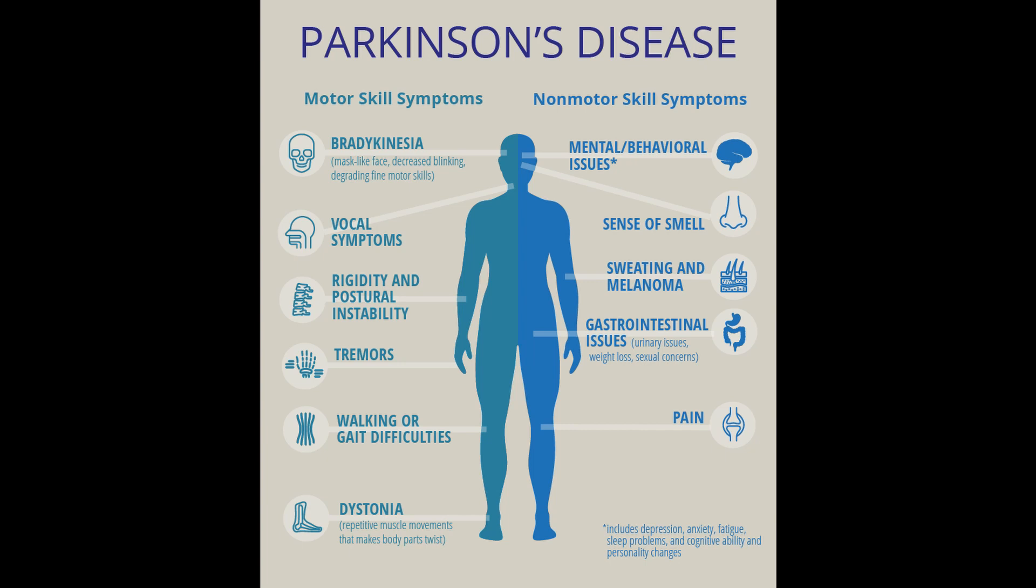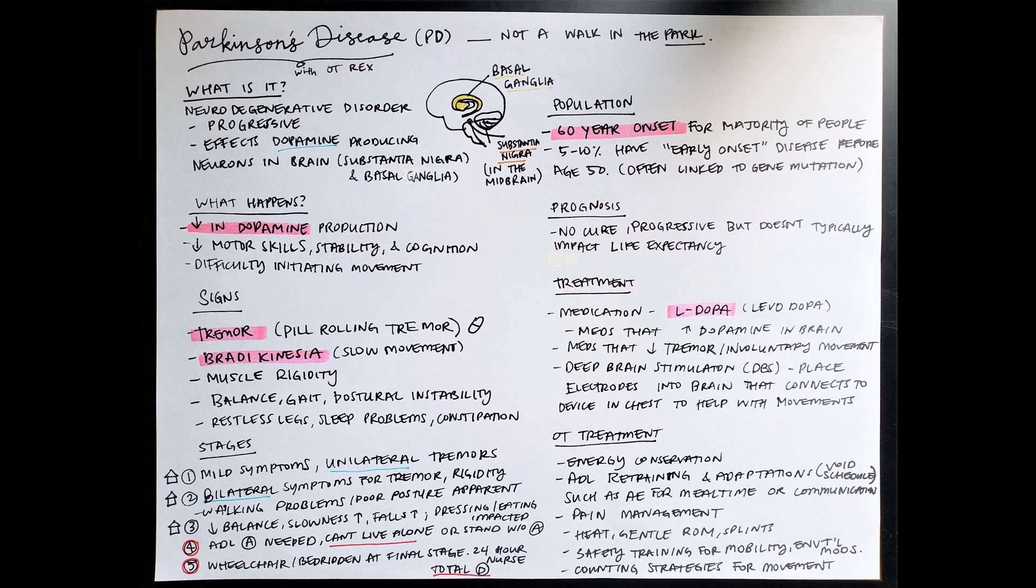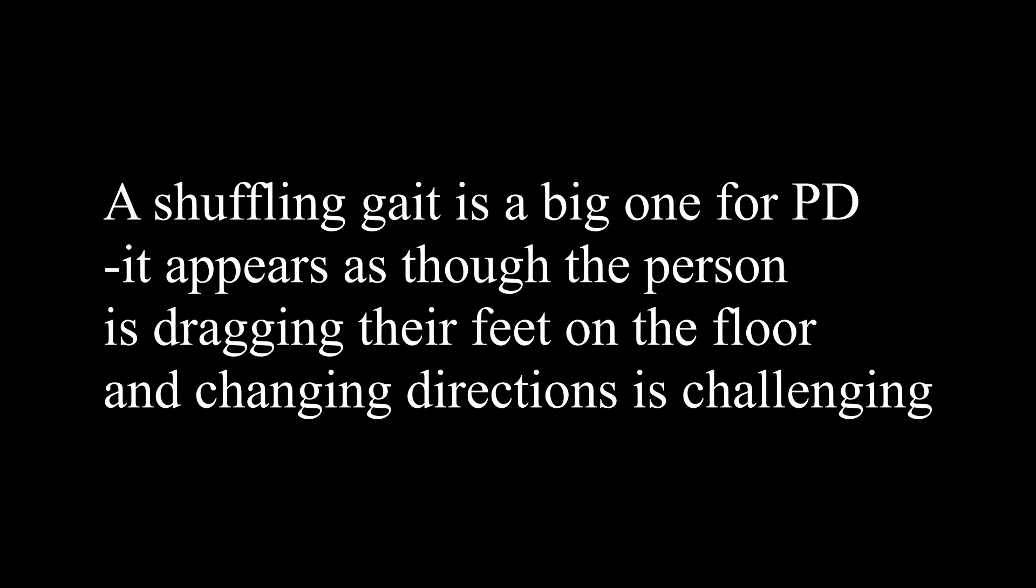If you've ever met someone with Parkinson's, a lot of times they have a hard time getting out of a seated chair. Once they sat down, then there's a lot of effort to get going. And so there's some counting and some rhythmic swaying, and that's really what gets their body going just to get that initiation to get up. So a lot of their movements will appear very slow. We also see a lot of muscle rigidity, as well as our balance, gait, and postural instability being impacted.